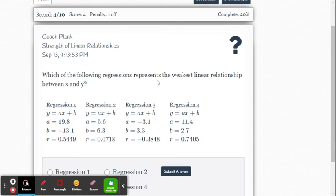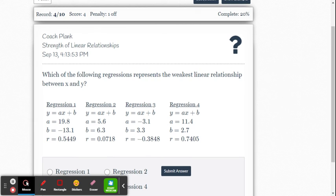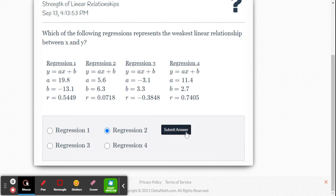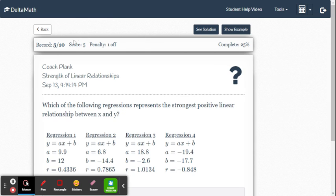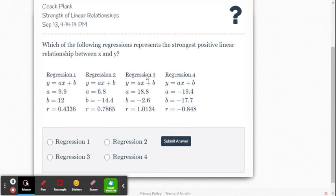Oh, careful here. Which of the following represents the weakest linear relationship? Weakest. All right, so that's going to be close to 0. So, 0.07. Negative 0.38 is further away from 0 than 0.07. So, this one, the answer is going to be 2. So, you've got to read carefully. But I did the extra one here. All right, and then that's it.